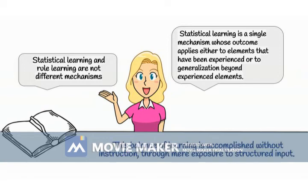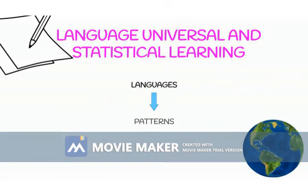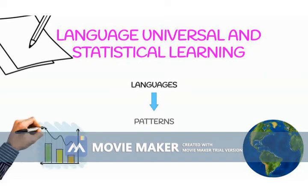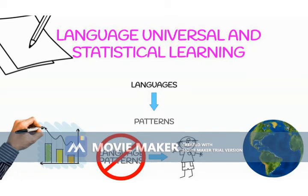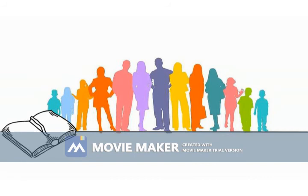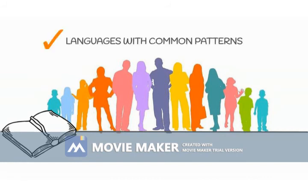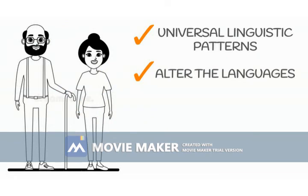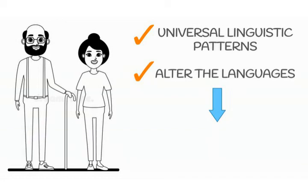Importantly, this balance of learning is accomplished without instruction through mere exposure to structured input. An extensive literature in linguistics has argued that languages of the world display a few highly common patterns and has suggested that language learners will fail to acquire languages that do not exhibit these regularities. Some studies have shown that both children and adults will readily acquire languages that follow the more common patterns found in natural languages. Other artificial language studies have shown that even adult learners preferentially learn languages that follow universal linguistic patterns and often alter the languages to be more in line with these universals. In adult learners these alterations are very small, but such changes can accumulate over generations of learners, shifting languages gradually through time.